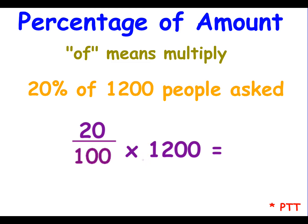So 20% of 1,200 people. If we use our technique from fractions, we divide 1,200 by 100 — moving the decimal place — so it becomes 20 times 12, which is 240.